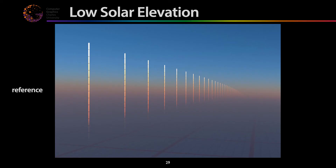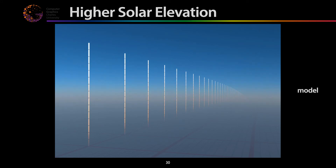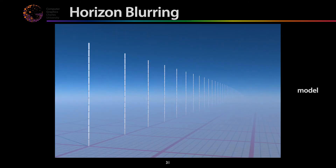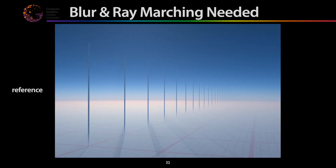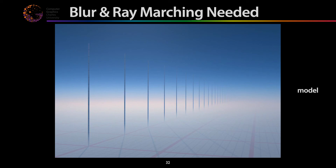How does this perform? Reference versus model for low solar elevation — hundreds of thousands of samples to get the reference noise-free, versus 100 samples per pixel for the model. Reference versus model: you can see a slight blurring at the horizon; this was intentionally done to keep the size of the data set down. From 8 kilometers altitude, that blurring is at the visible horizon hundreds of kilometers away, so you would rarely see the effect in real renderings — and even if you do, the blur is not really an objectionable artifact.